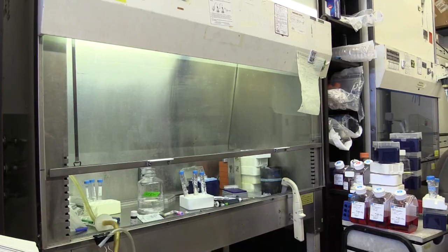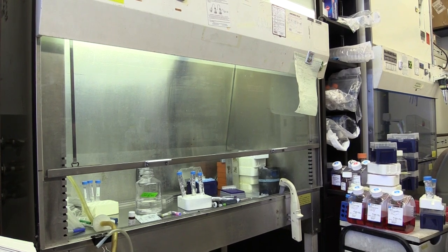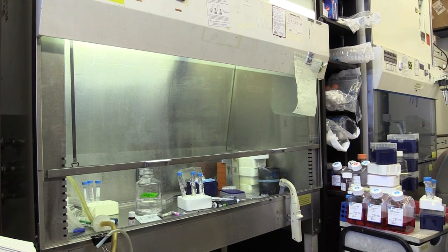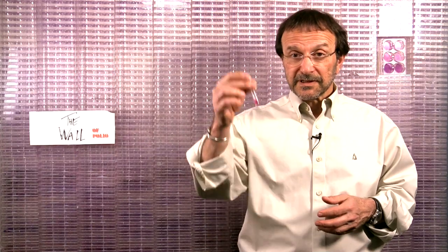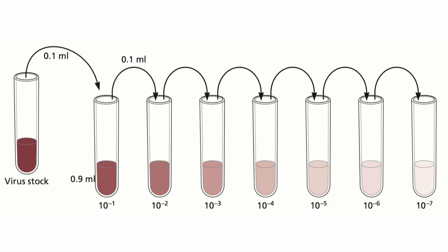Let's now take a look at how a plaque assay is really done. We do plaque assays in a cell culture hood, which provides an aseptic environment to keep our cells sterile. Starting with a sample of virus, we make tenfold dilutions by adding 0.1 ml of our virus stock to 0.9 ml of medium, mixing, and then repeating.